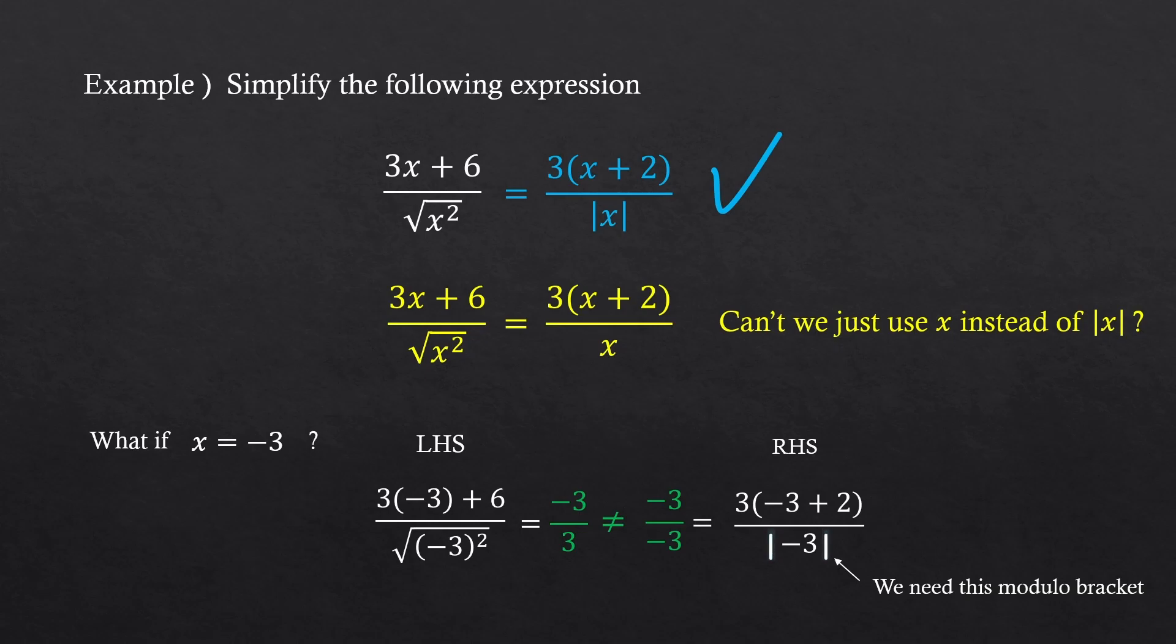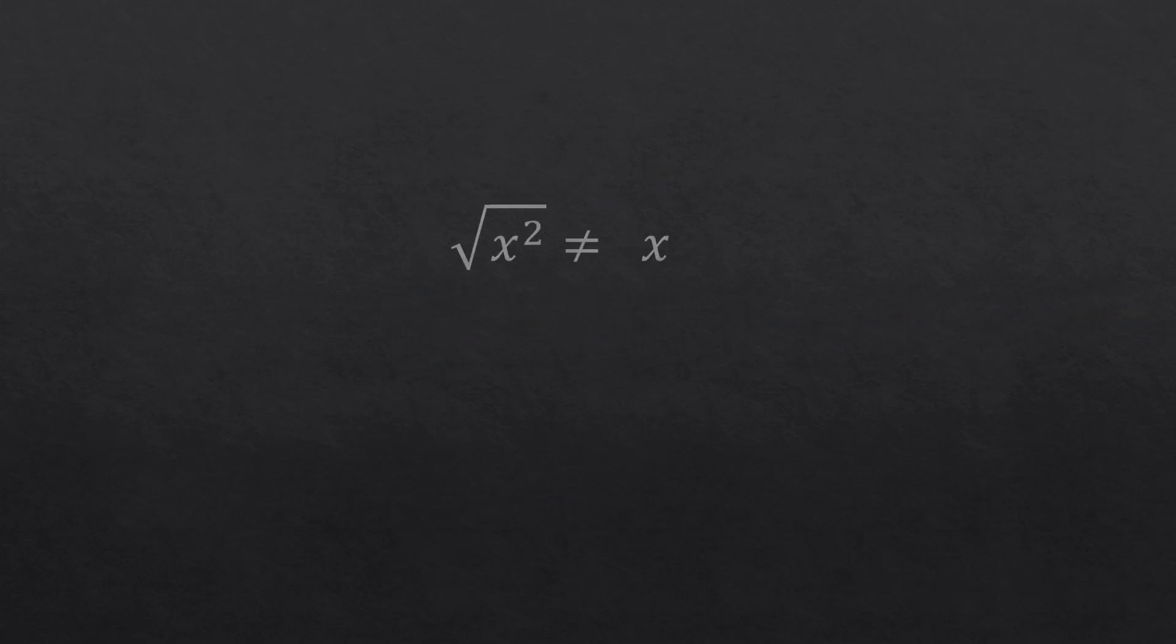That's why we need that modular bracket, or the absolute value bracket. That one is a wrong answer. This is why square root of x squared isn't x, but rather the absolute value of x. So be careful when you find something like that while deriving some equations.